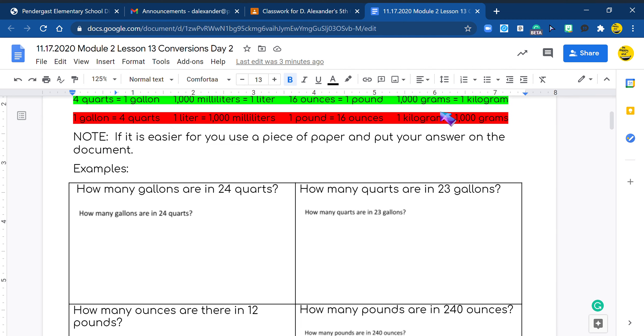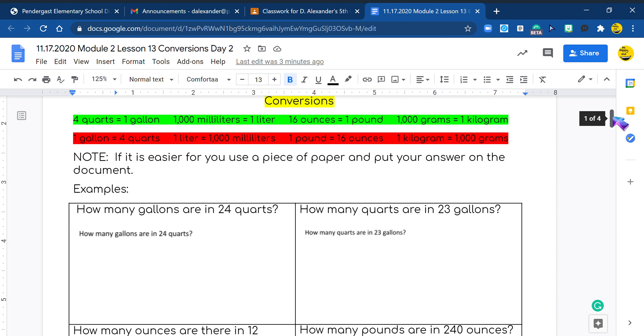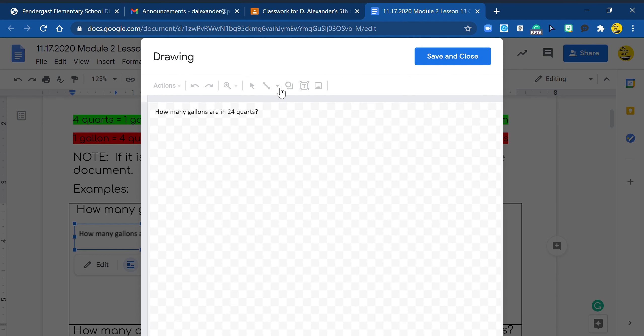So let's go look at our examples here. In our examples I need to leave my conversions up so I can see them. I have 'how many gallons are in 24 quarts?' So gallon to quarts, this means I'm going to divide. I'm going to go in here. There's one gallon to four quarts and I'm going to use my neat little scribble tool right here. And with my finger I'm going to write one gallon equals four quarts.